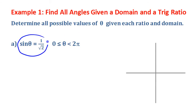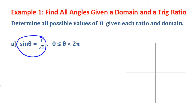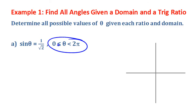We're given that sine of theta — some angle we don't know, or angles, could be more than one — is 1 over root 2. We're asked to look in the domain where theta is between 0 and 2π.